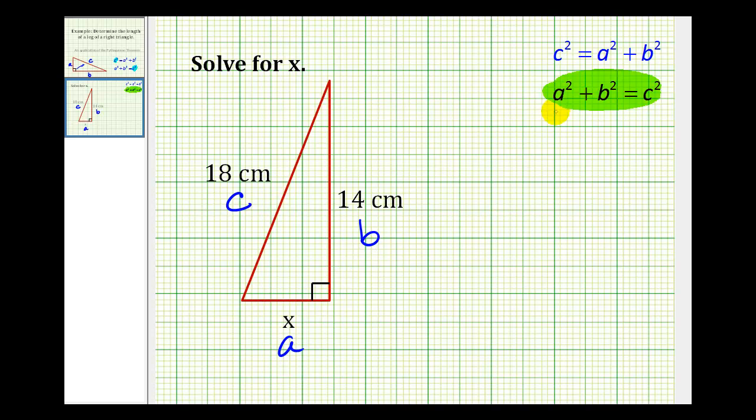Using the Pythagorean Theorem, we'll have a² + b² = c². Or in this case, x² + 14² equals 18².